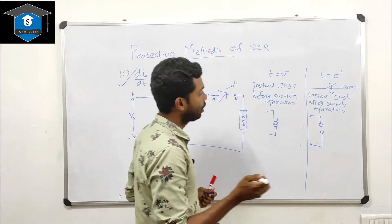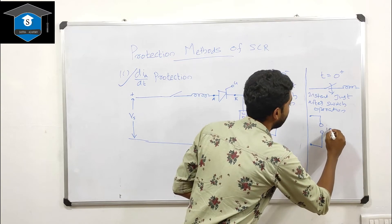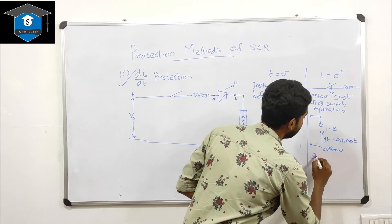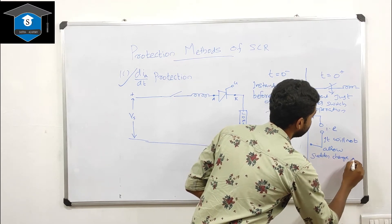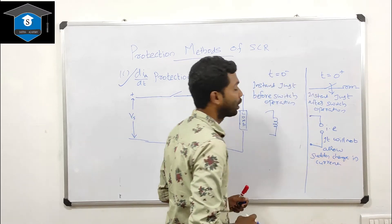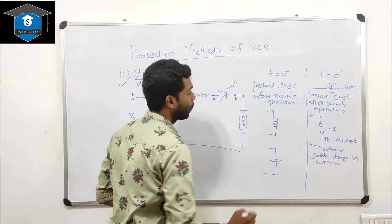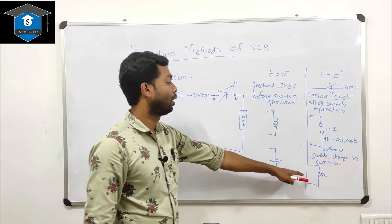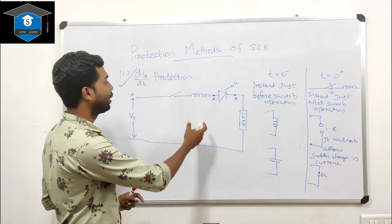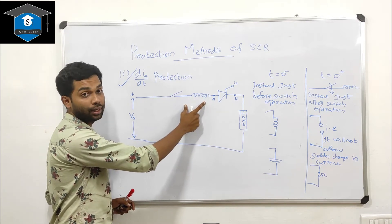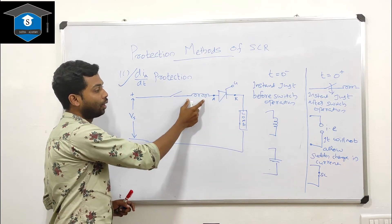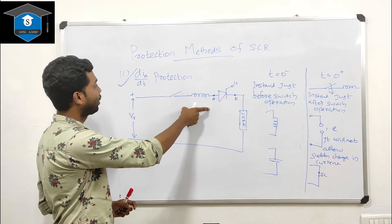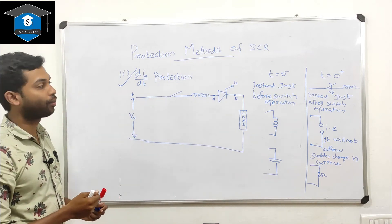Because the inductor acts as an open circuit at t equals zero plus, it will not allow a sudden change in current. Therefore, a series inductor connected with the SCR acts as an open circuit under transient conditions and will not allow a sudden change in current, thus protecting the SCR.